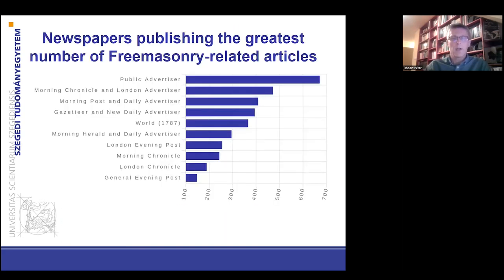We can ask another research question: which newspapers published the greatest number of articles related to Freemasonry? The Public Advertiser, Morning Chronicle and London Advertiser, Morning Post and Daily Advertiser, and the Gazetteer and New Daily Advertiser are on the top of the list. Why did these newspapers publish so many articles about Freemasonry?